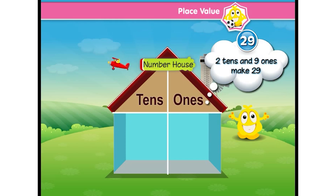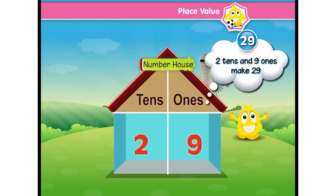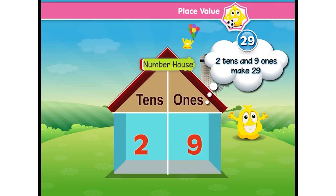If we have to arrange 29 in the number house, and only one digit can go in one room, then 2 will go in the tens room and 9 will go in the ones room. Now 29 is set in the number house.